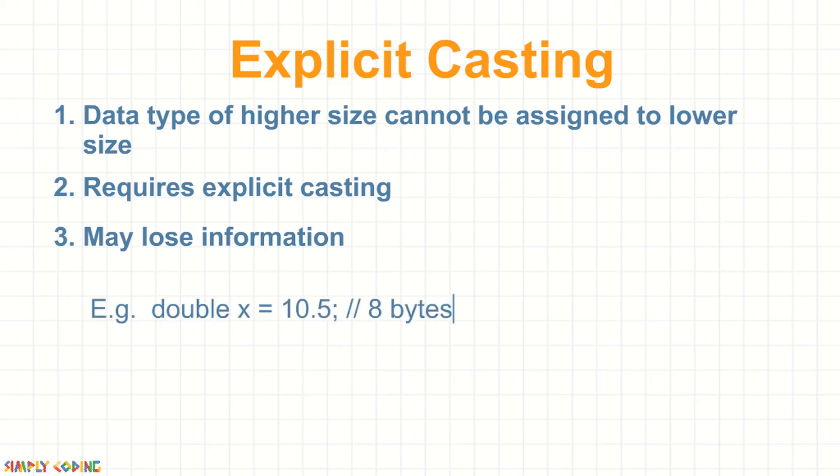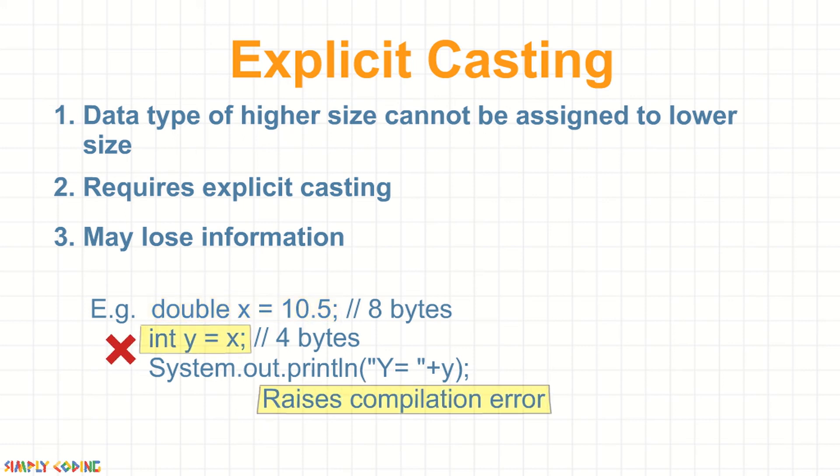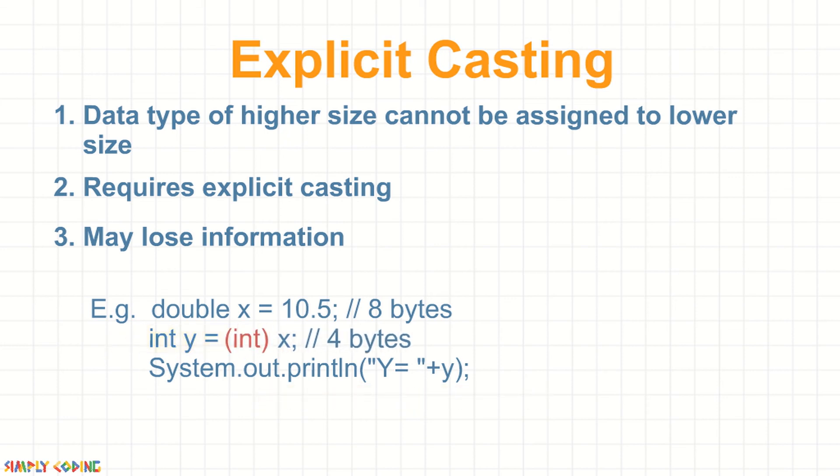So here in this example, we have a double value of 10.5 which takes 8 bytes. If we try to assign it to an integer directly, it will raise a compilation error. However, if we do typecasting, it will allow it to go ahead. But however, when we try to print the value of integer, it gives a value of 10.